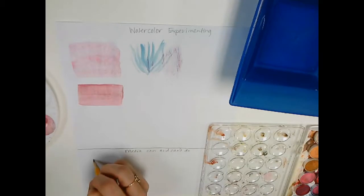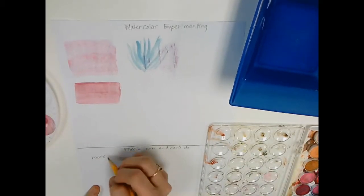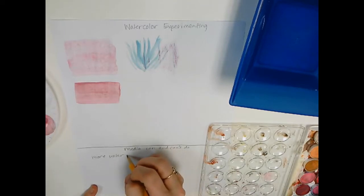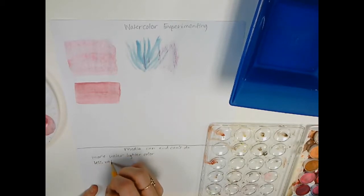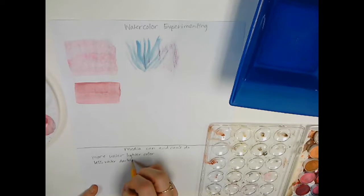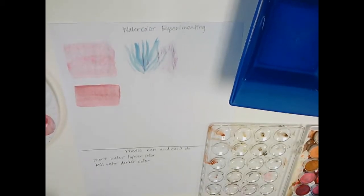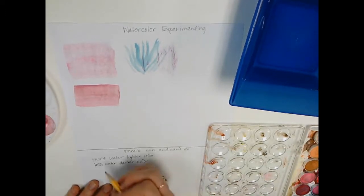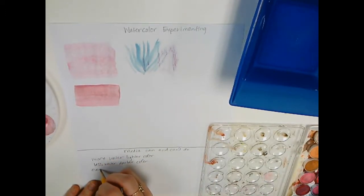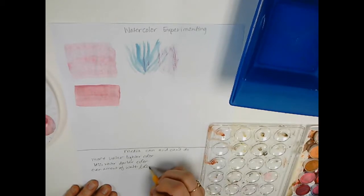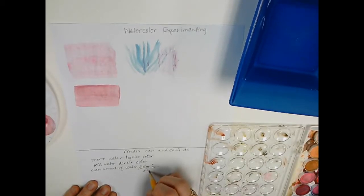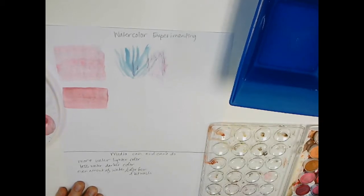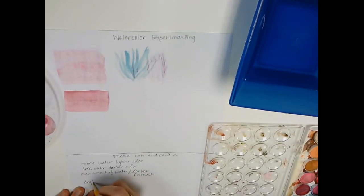So, more things I might want to add is more water, lighter color, less water, darker color. An even amount of water in color for a wash. A flat wash. Okay?